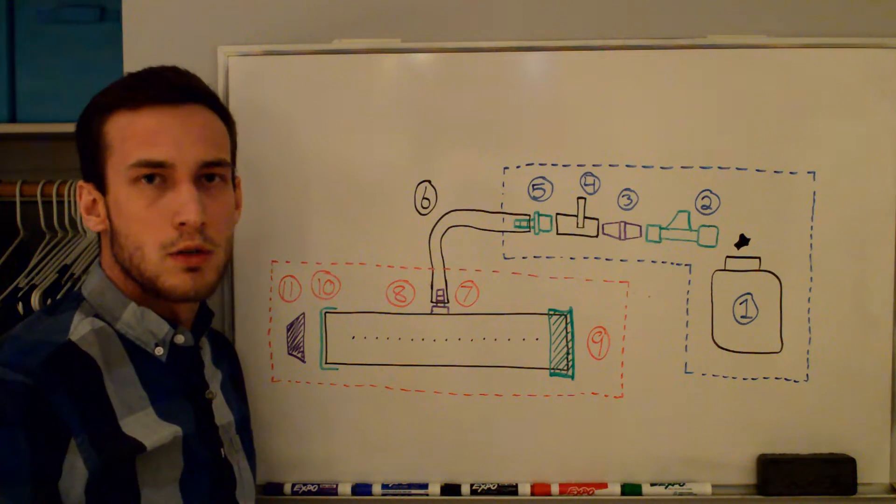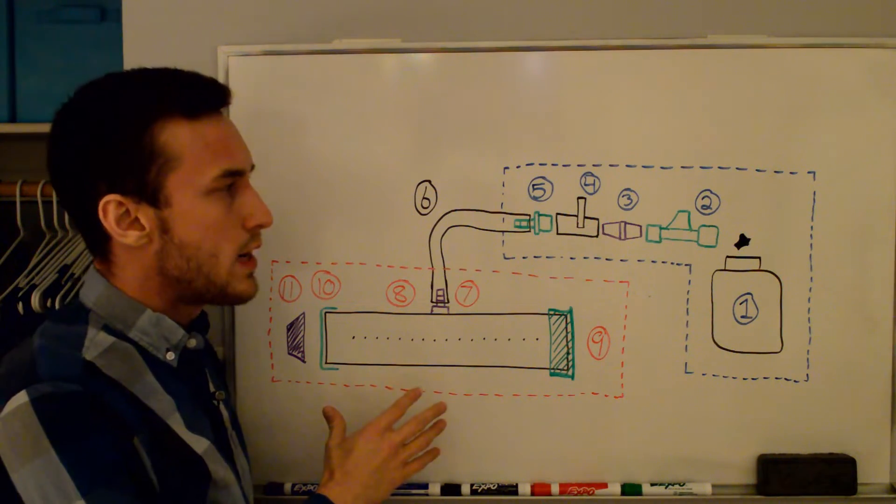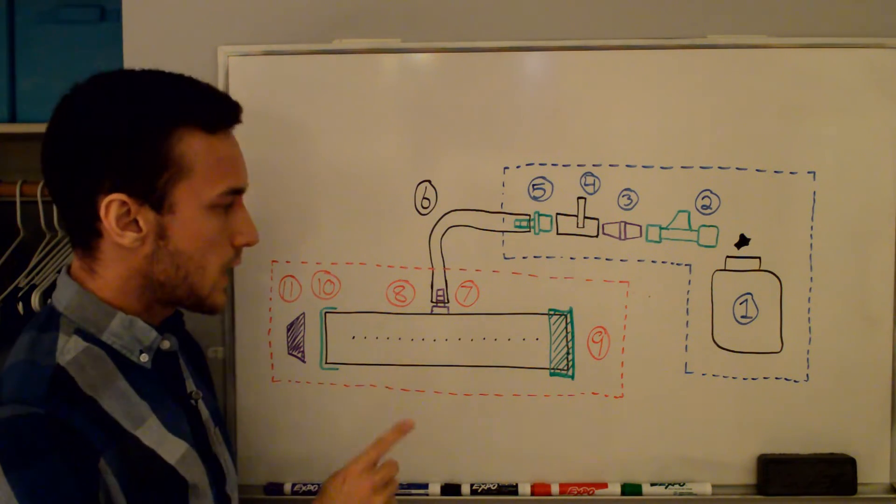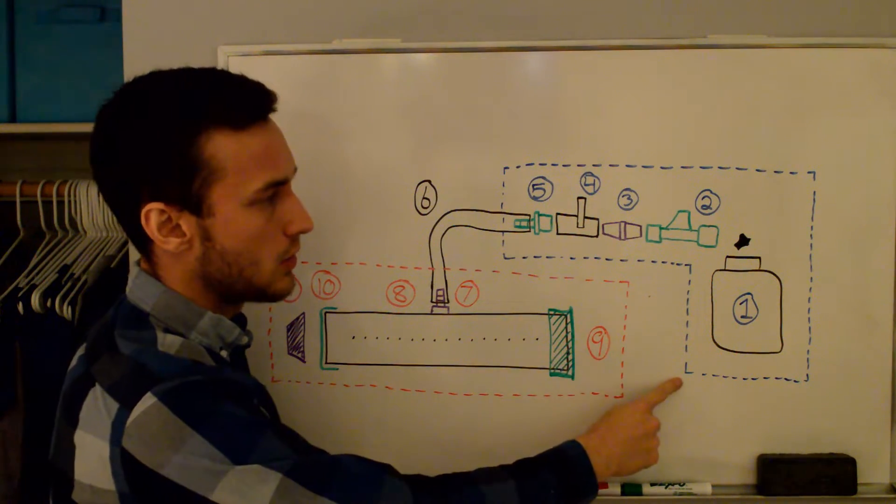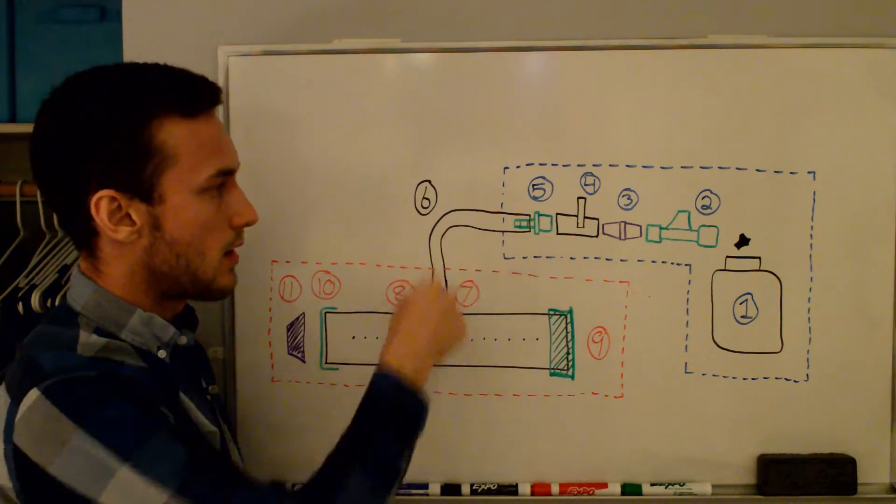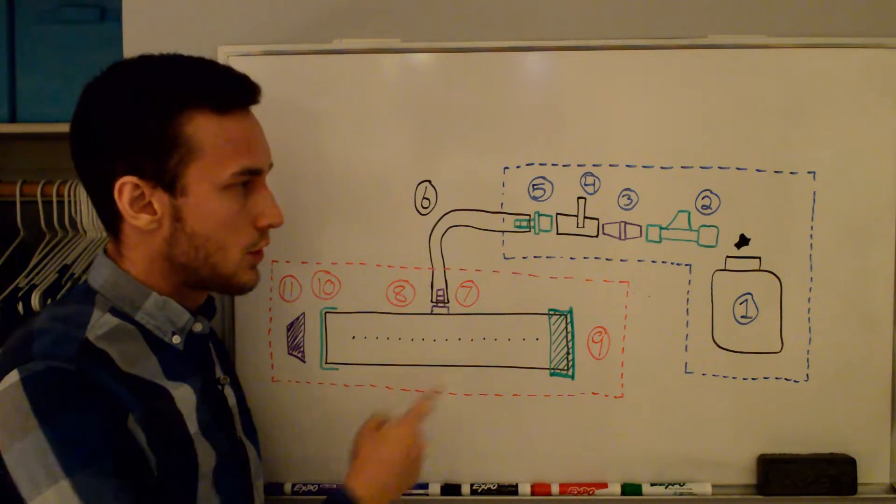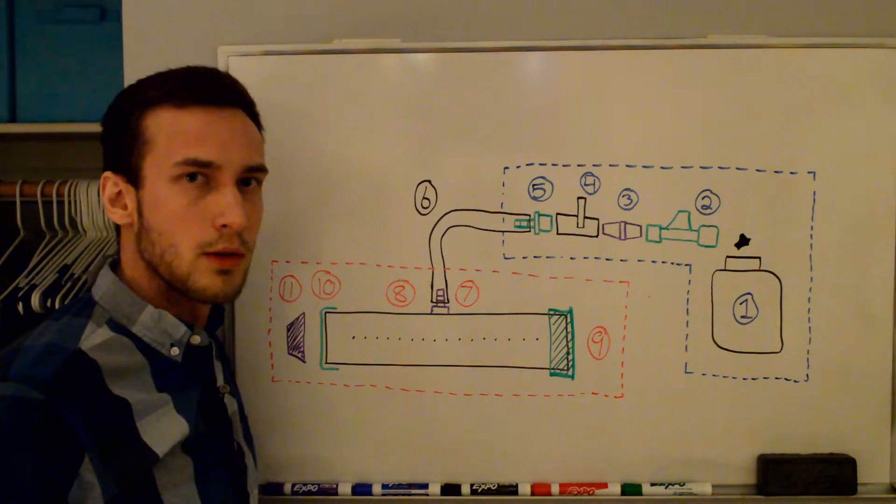Please check out the video description because there's links to everything that you'll need down there. Here's a schematic overview of the entire setup. I'm breaking this into two sections. The first section is the tube section, which is outlined in red here, and the second section is the gas section, which is outlined in blue. We're going to build these separately, and then in the end we're going to connect them with a flexible hose. The circled numbers on the screen here correspond to parts listed in the video description, and they'll also pop up on the screen as I'm talking about them.